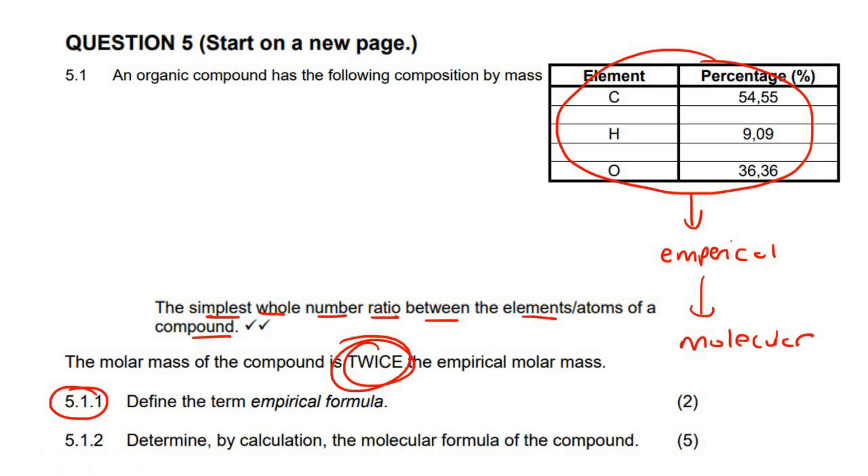You would definitely need a periodic table, but I'll just give you these masses. So on the periodic table, carbon is 12, hydrogen is 1, oxygen is 16. So the first thing to do is to realize that they told us that these are the percentages by mass. If you add all of these numbers together, what should it give you? Well, 100, because percentage always adds up to 100. So what we will rather do is we will just pretend that this is not percentage. Let's rather pretend that it's grams.